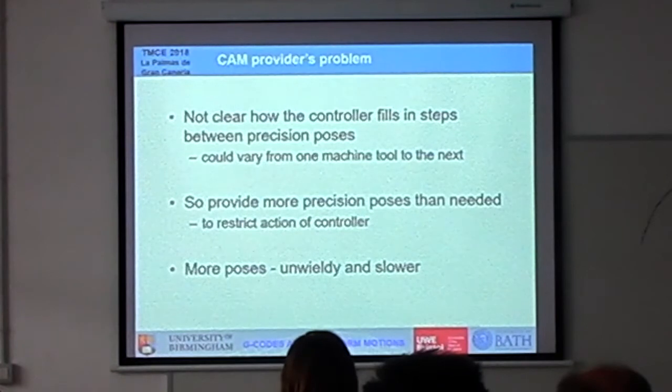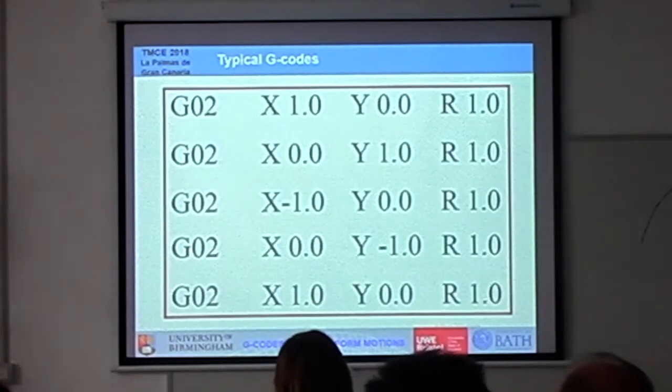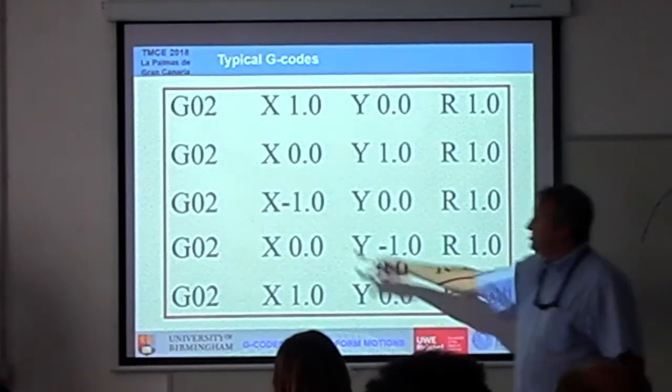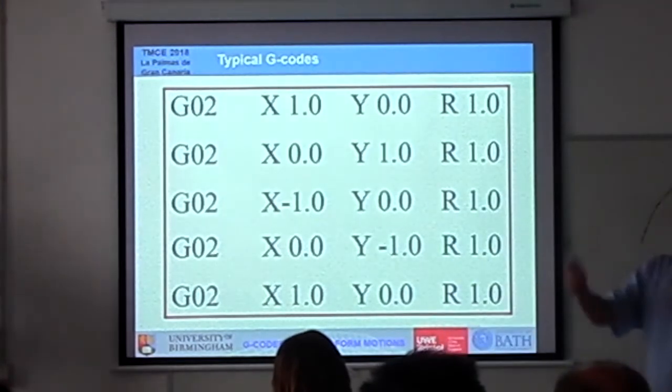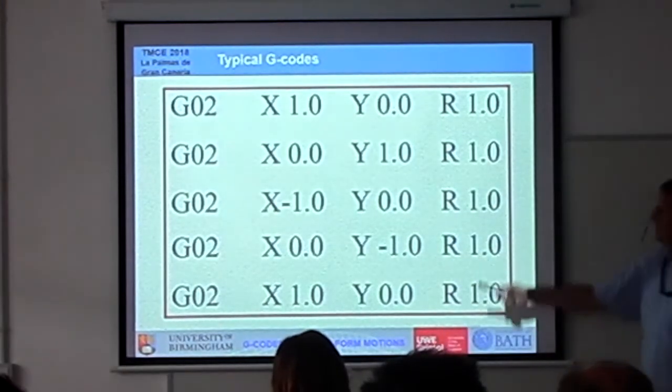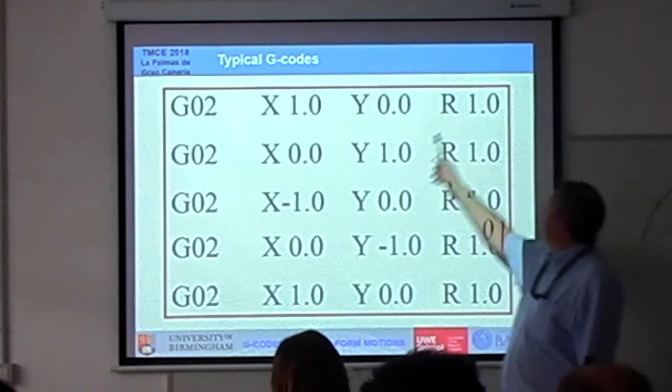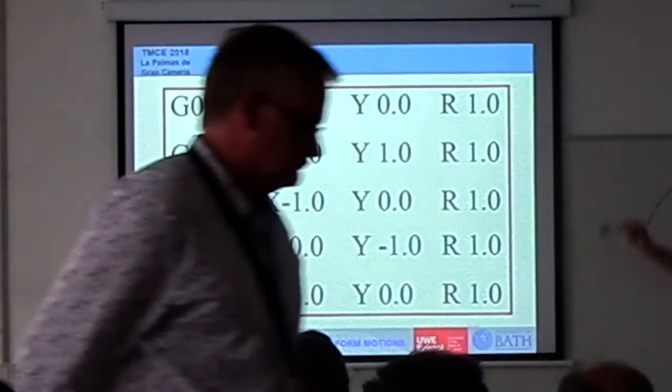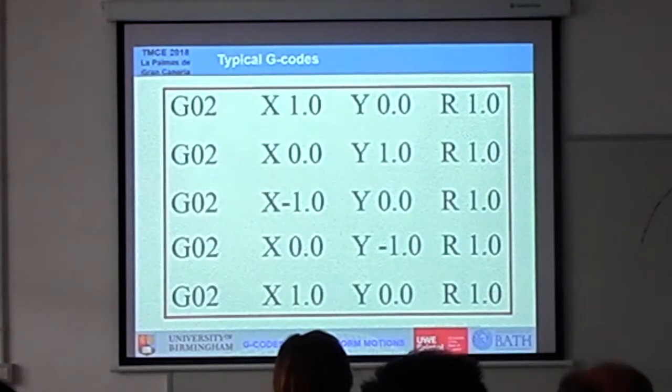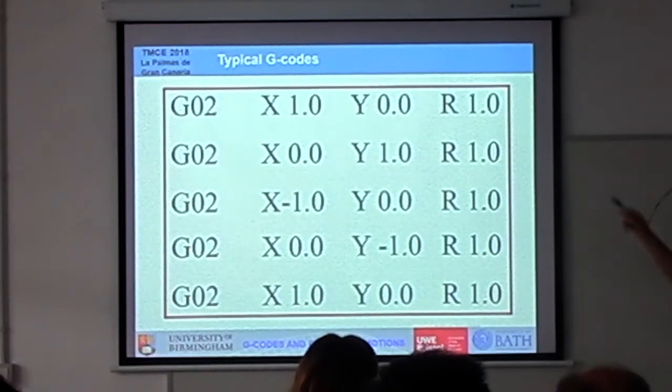We can also do this. G02 and G03 are radial interpolations. We've got a start point, we've got a stop point, and we'll also say a radius. What this is doing here is moving it round in segments to produce a circle. But again, it's doing these radiuses. We have no guarantee that it's actually following this curve.